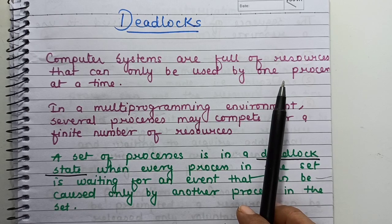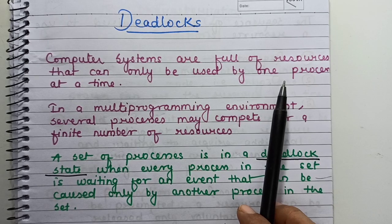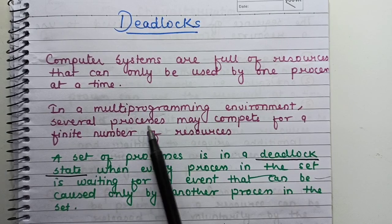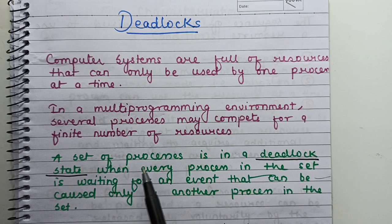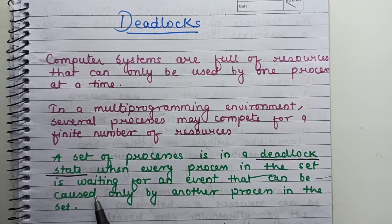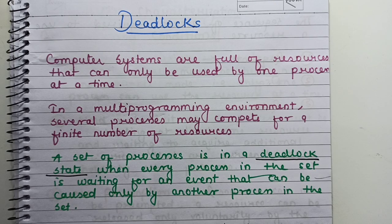In the same way, having two processes using the same file system table slot will lead to a corrupted file system. Consequently, all operating systems have the ability to grant a process exclusive access to certain resources. In a multi-programming environment, several processes may compete for a finite number of resources. A set of processes is in a deadlock state when every process in the set is waiting for an event that can be caused only by another process in the set.